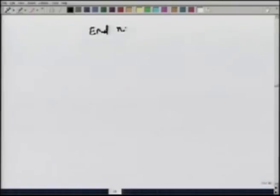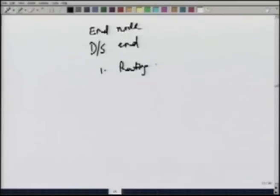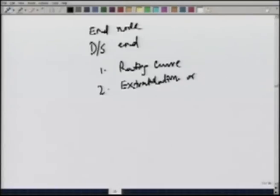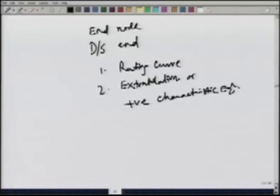Similarly for the downstream end node, we generally have the rating curve and either extrapolation or the positive characteristic equation.